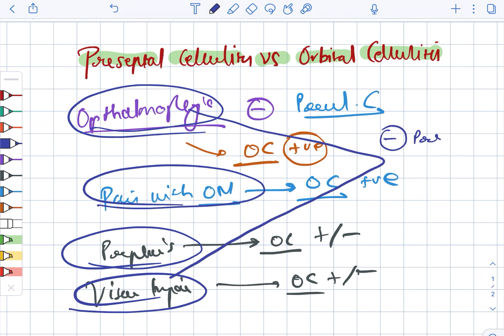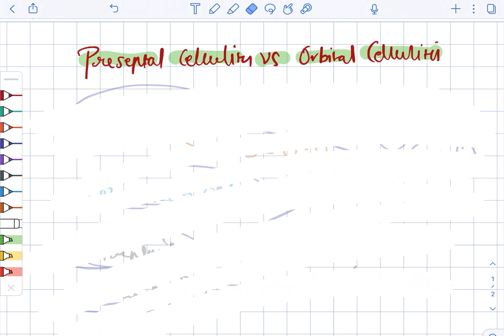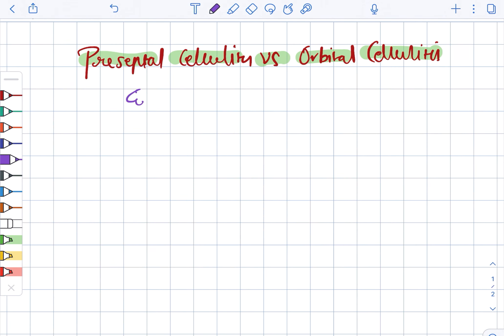proptosis, and vision impairment - all these are negative in case of preceptal cellulitis. Some common features shared by both conditions include